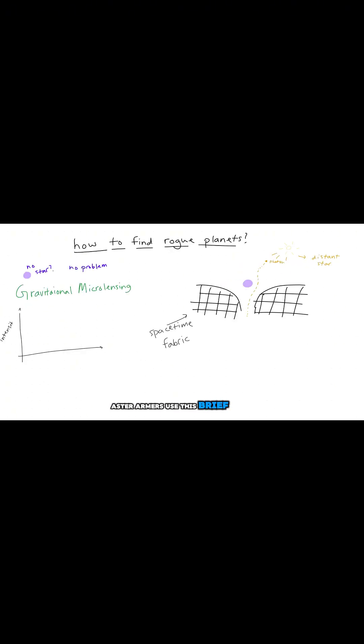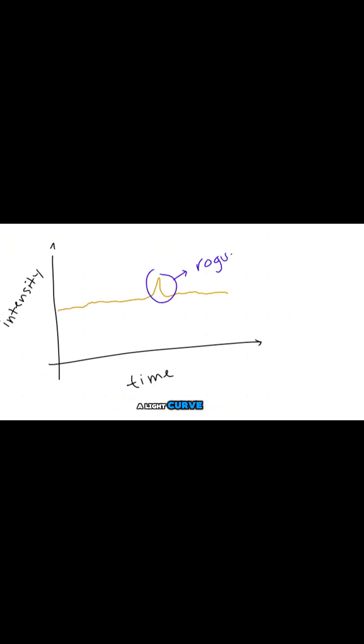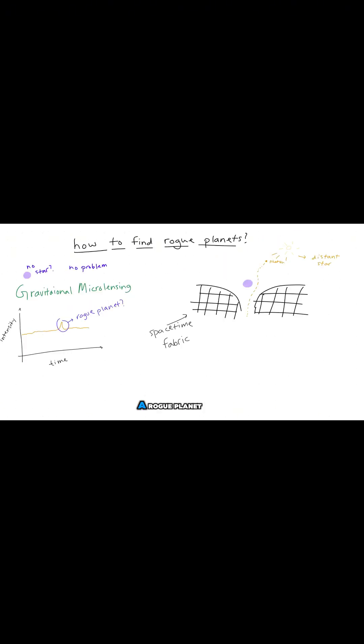Astronomers use this brief brightening of the star, captured as a spike on a light curve, to infer the presence of a rogue planet. The duration of the spike can tell us the planet's mass.